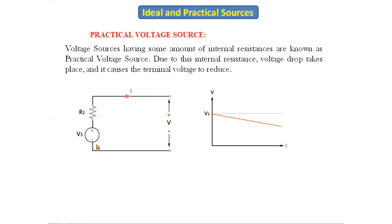Simply remember: in an ideal voltage source there is no internal resistance and there is no drop in the voltage. In a practical voltage source there is an internal resistance connected in series with the voltage source, and in the characteristics there is a drop in the voltage because of this resistor.